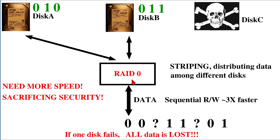This is why in an industrial environment or in a company, instead of RAID 0 you most often deal with some sort of RAID 1 or derivatives of RAID 1 — mirroring — which we will talk about in the upcoming slides.